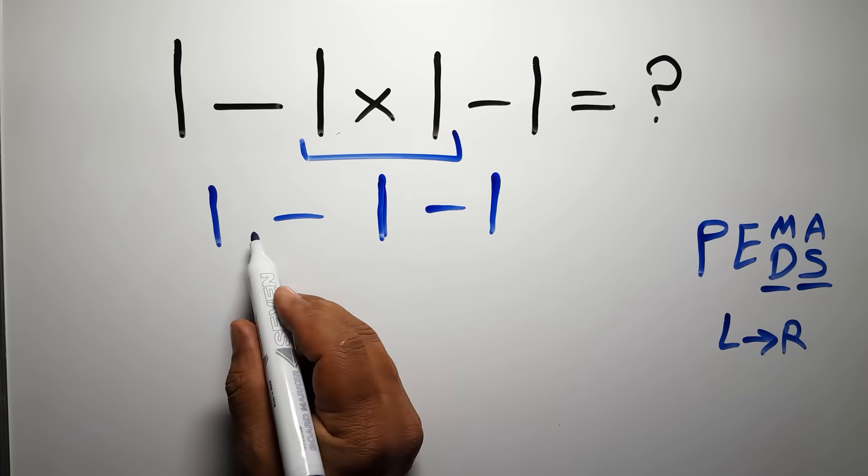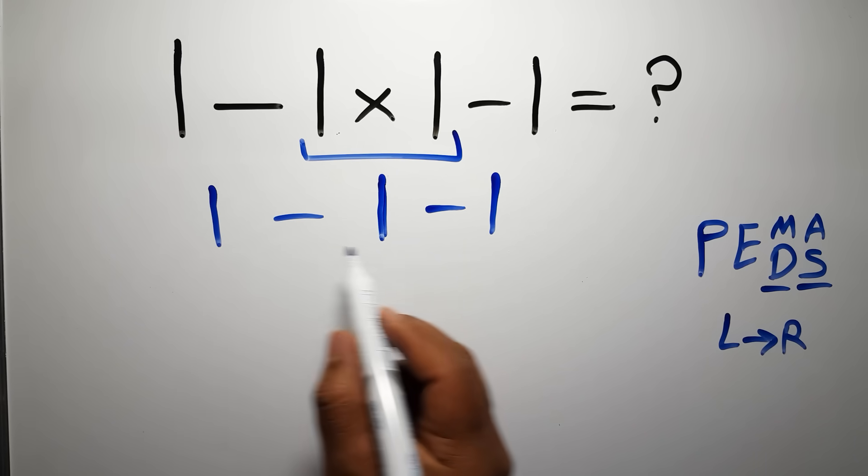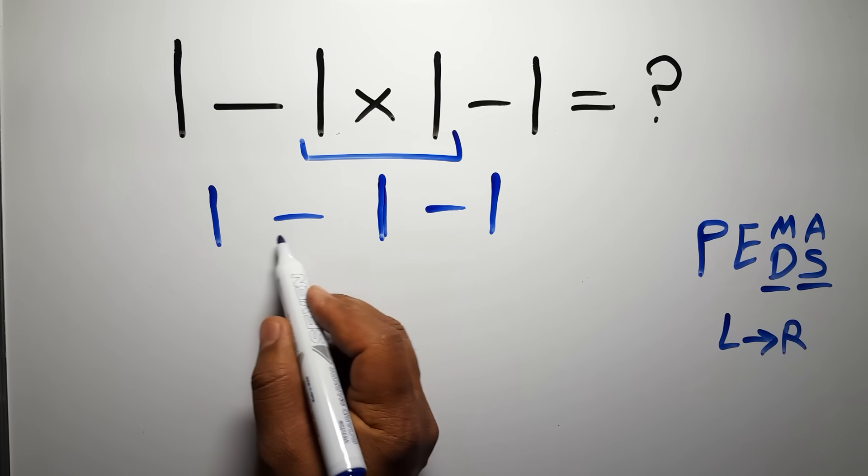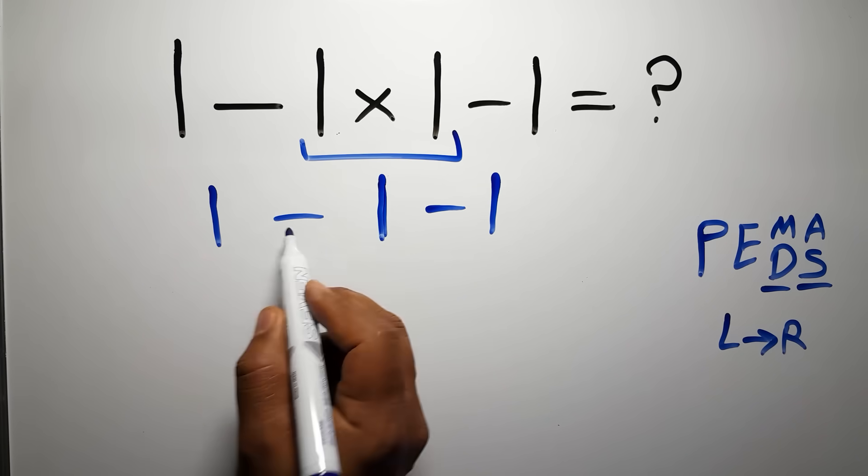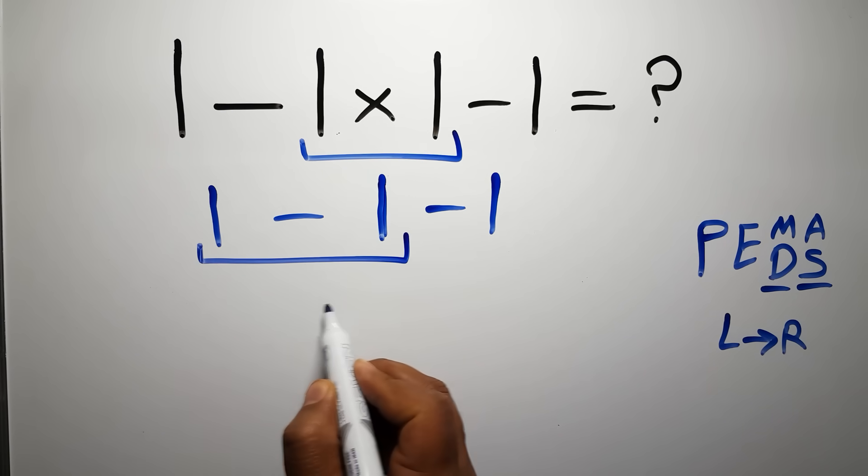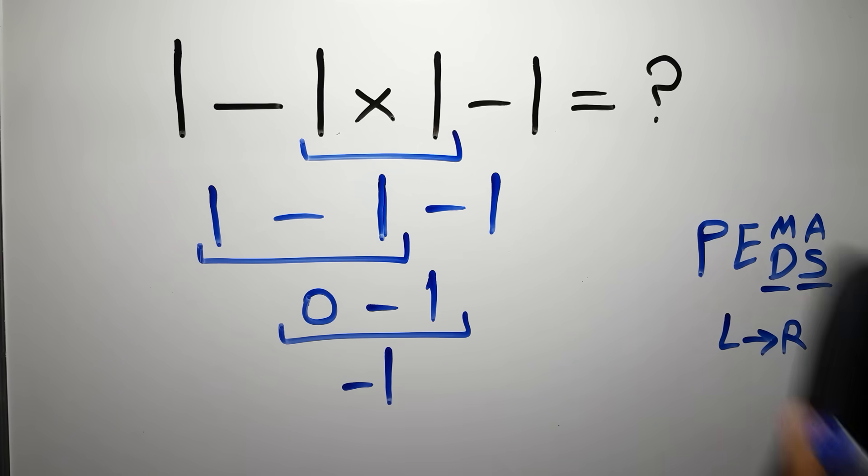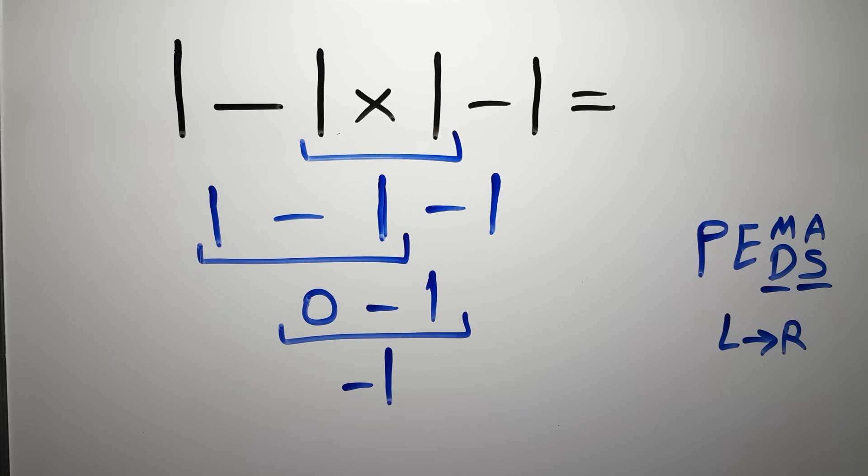When we have more than 1 subtraction in an expression, we have to work from left to right. So here, first we have to do this subtraction. 1 minus 1 gives us 0. So 0 minus 1, which equals negative 1, and this is our final answer to this problem.